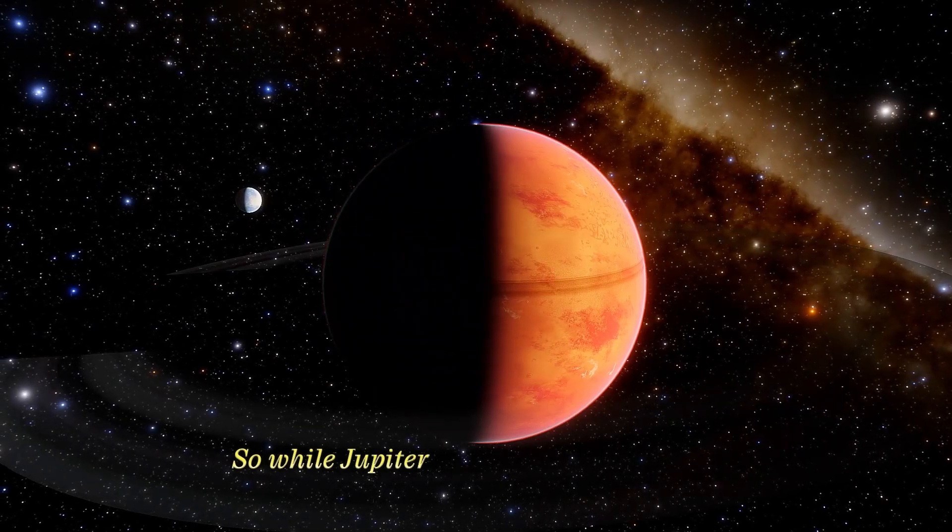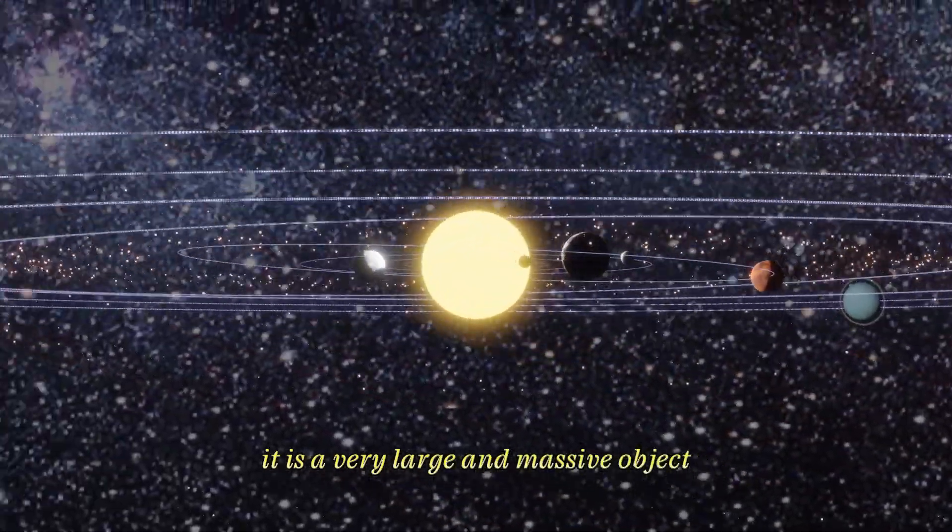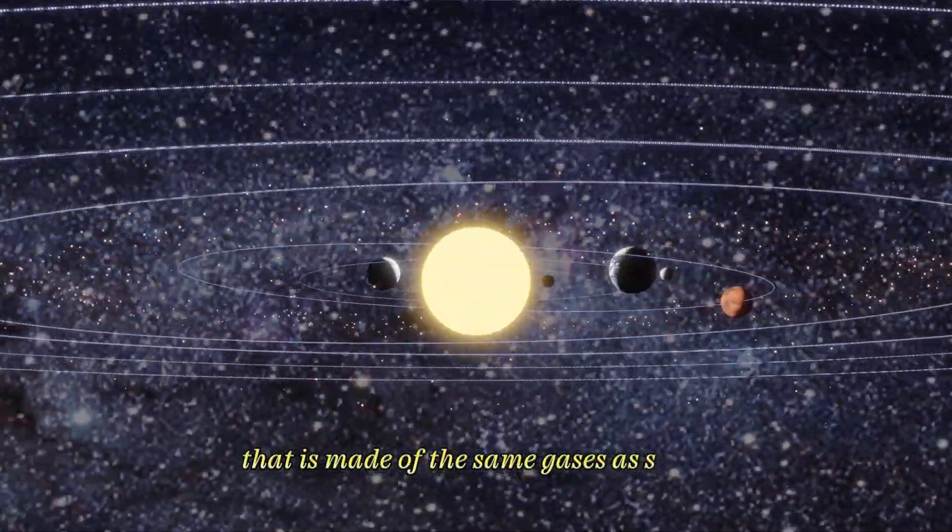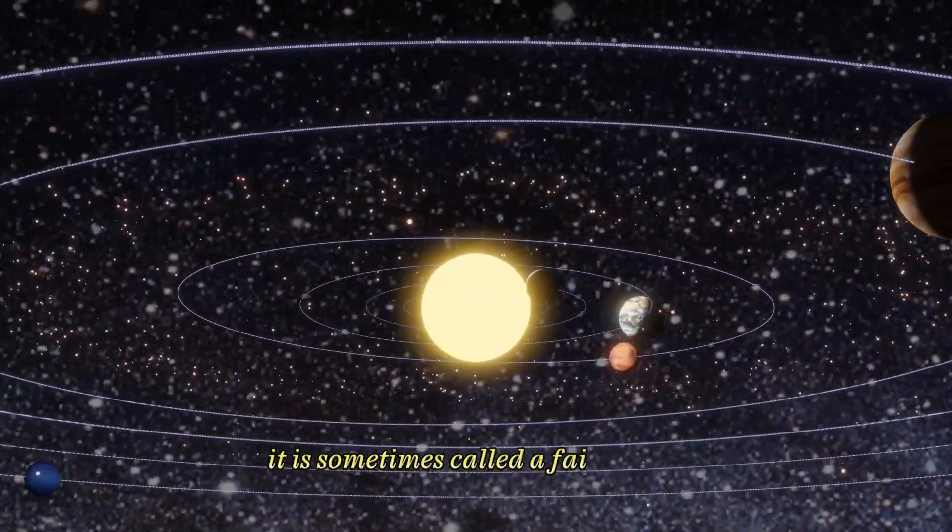So, while Jupiter is not technically a star, it is a very large and massive object that is made of the same gases as stars. For this reason, it is sometimes called a failed star.